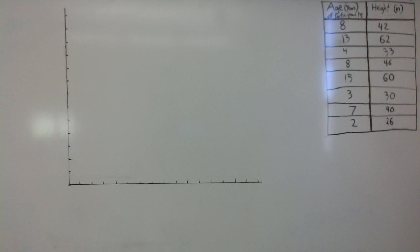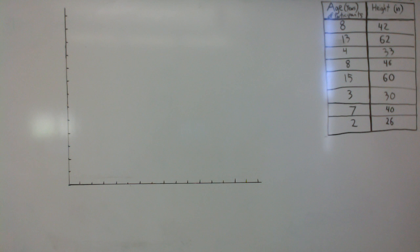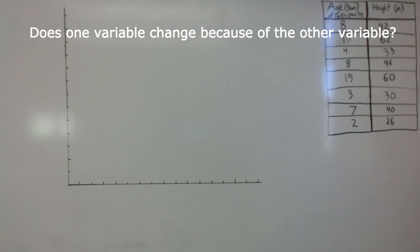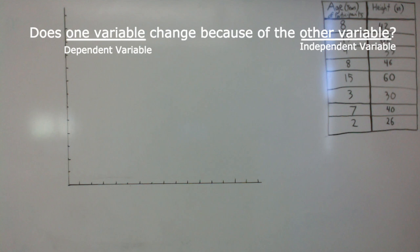Your data table contains two variables: a child's age and height. To figure out which variable is dependent and which is independent, ask yourself: does one variable change because of the other? If so, the one that's changing depending on the other is the dependent variable, and the other is your independent variable.